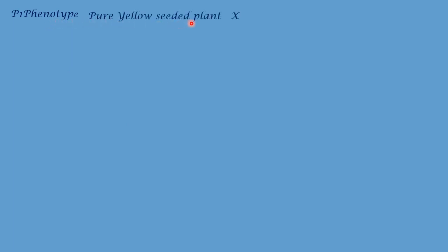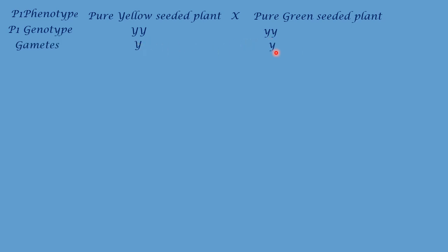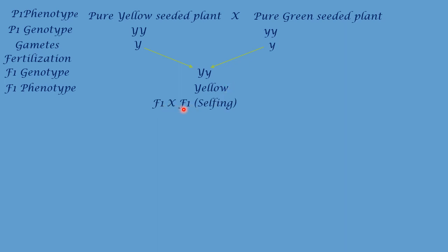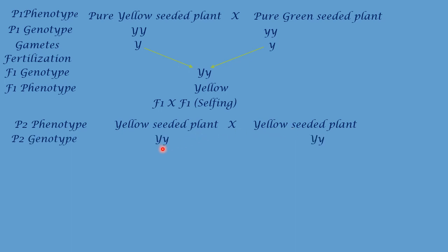In the second example, P1 phenotype is: pure yellow seeded pea plant crossed with pure green seeded pea plant. Their genotypes are capital Y capital Y and small y small y. They form gametes capital Y and small y respectively. During fertilization, the male gamete fuses with the female gamete to form a zygote of capital Y small y type. It shows the character as yellow, which represents F1 phenotype. Next, this yellow plant is crossed with itself — F1 selfing — and becomes P2, the second parental generation. P2 phenotype: yellow seeded pea plant crossed with yellow seeded pea plant. Their genotypes are capital Y small y and capital Y small y. First parent forms capital Y and small y; second parent also forms capital Y and small y.